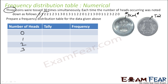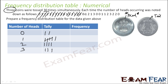Recording the outcomes from 30 tosses: 0, 1, 2, 2, 1, 0, 1, 2, 2, 1, 1, 2, 3, 1, 3, 0, 2, 3, 1, 3, 0, 1, 3, 0, 1, 3, 1, 1, 2, 1, 3, 1, 1, 2, 0, 1, 2, 0.